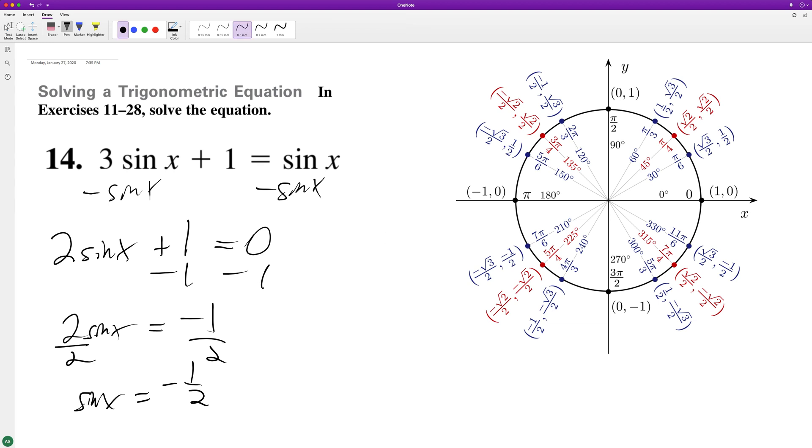So where does sine equal negative 1 half? Sine, that's y over r. So that's going to be the y component. We're looking at negative 1 half.